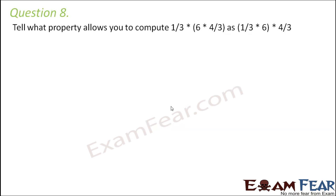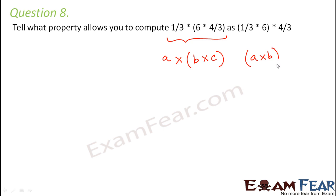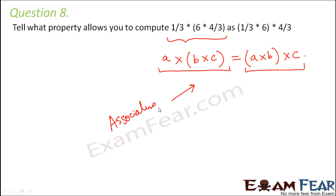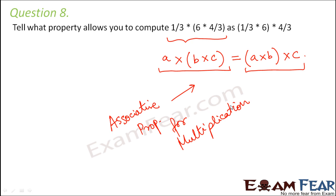What property allows you to compute (1/3 × 6) × 4/3 as 1/3 × (6 × 4/3)? This is in the format A×B×C grouped differently. The property that tells us these two values are the same is the associative property for multiplication, and this property holds true for rational numbers.